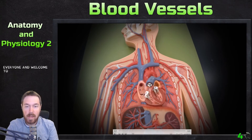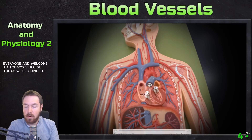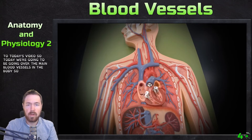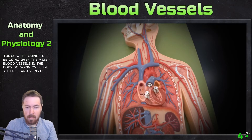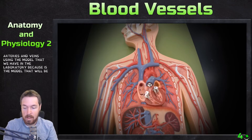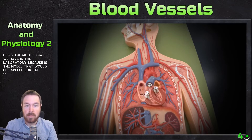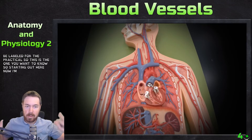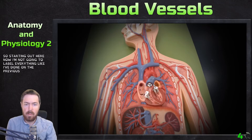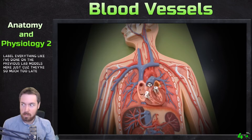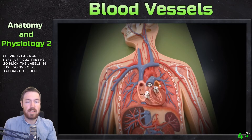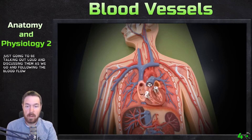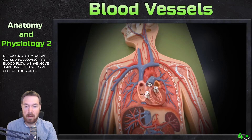Hello everyone and welcome to today's video. We're going to be going over the main blood vessels in the body — the arteries and veins — using the model we have in the laboratory, because this is the model that will be labeled for the practical. I'm going to be talking out loud and discussing them as we go, following the blood flow. We come out of the aortic valve right here.